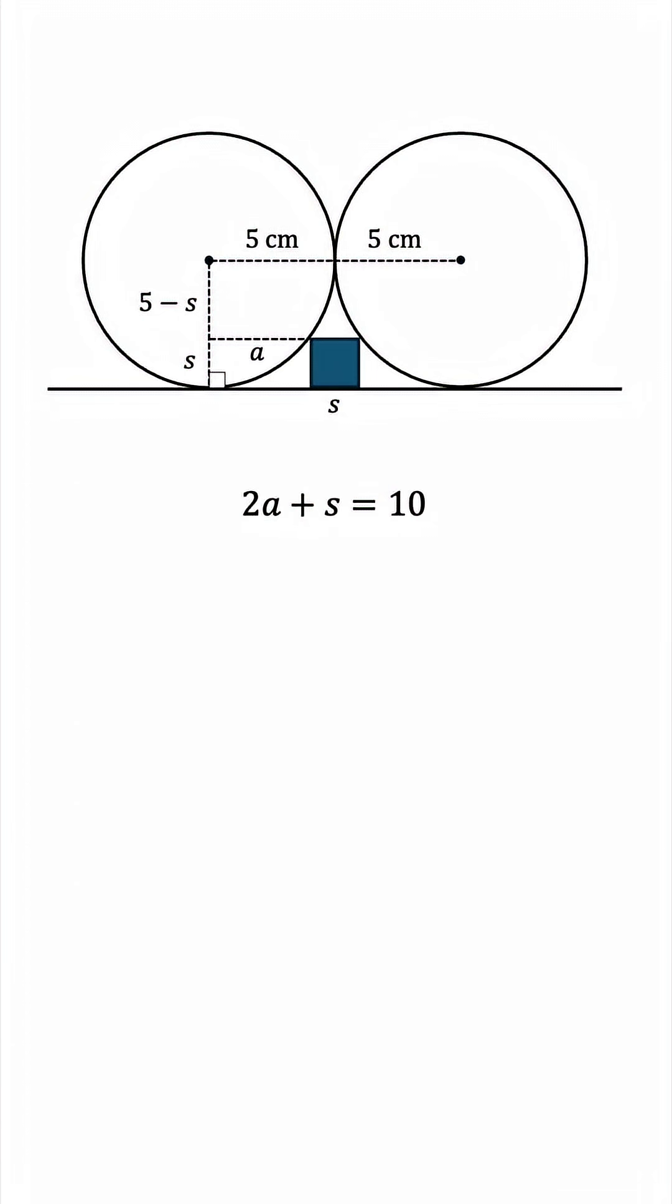And to get a second equation, we'll draw another radius like this. Notice that this angle must also be 90 degrees, so we have a right-angled triangle over here. Using the Pythagorean theorem, we get A squared plus the square of 5 minus S equals 5 squared.